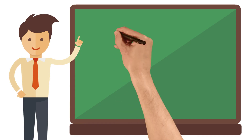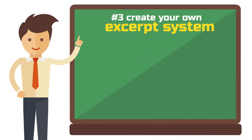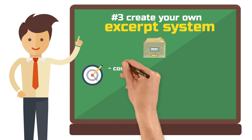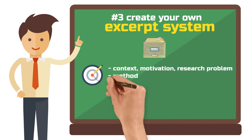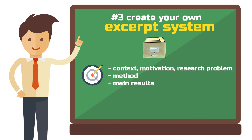Step 3: Create your own excerpt system. Creating such a system is an important step in effectively managing and organizing the information you gather from reading. The basic goals of paper reading are to understand the context, motivation, problem, the method and the main results of the paper.